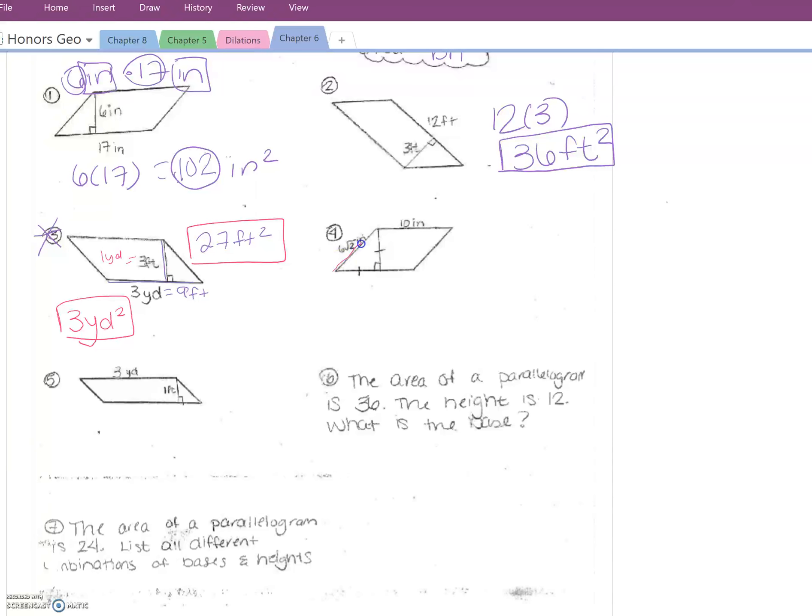In number 4 you don't have the height, you have this slanted measurement right here, but this triangle is isosceles, which means it's a 45-45-90. So if I were to use the hypotenuse I could figure out that this is 6 and this is 6. You don't actually need the bottom 6 because remember opposite sides of parallelograms are congruent, so the base is already 10 and now we know the height is 6, so 6 times 10 is 60 inches squared.